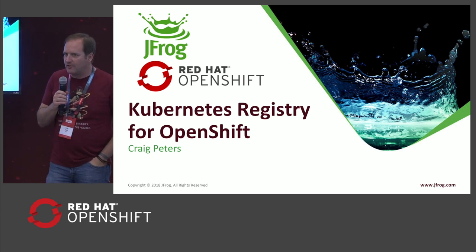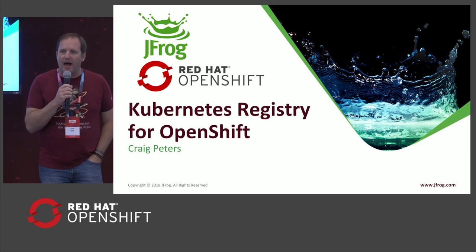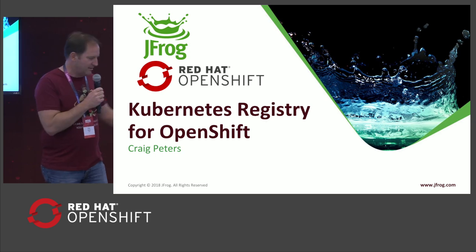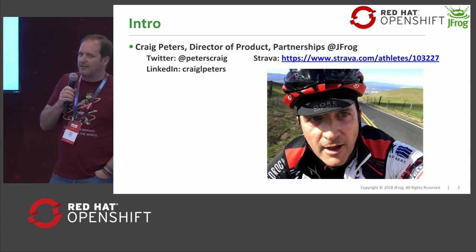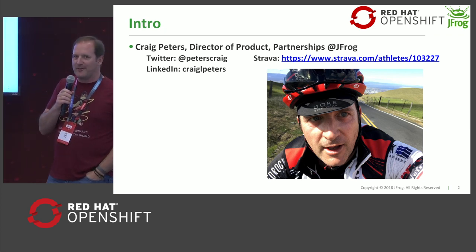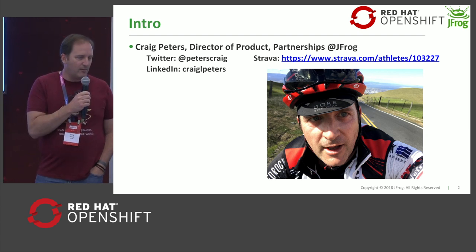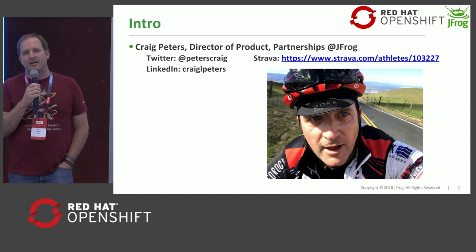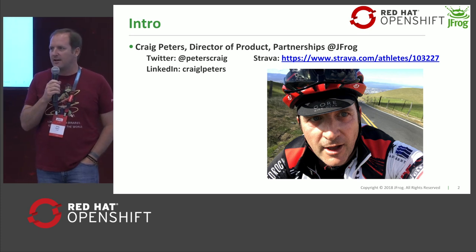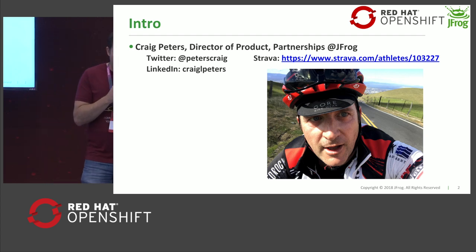Welcome. My name is Craig Peters and I'm a product manager at JFrog. I'm here to talk to you about how you can work with OpenShift and understand what a Kubernetes registry means. Just a couple of words about myself — you can follow me on social media, as an athlete. I'm a cyclist; that's what I love to do when I'm not playing with computers. When I am, I spend a ton of time building cloud native apps for Kubernetes and playing with all the different distributions of Kubernetes, most recently with OpenShift.